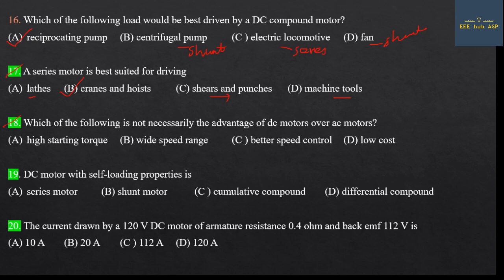Seventeenth question: Which of the following is not necessarily an advantage of DC motor over AC motor? Advantages of DC motors include high starting torque, wide speed range, and better speed control. Low cost is not a DC motor advantage — AC motors are lower cost. Answer: Option — Low cost.